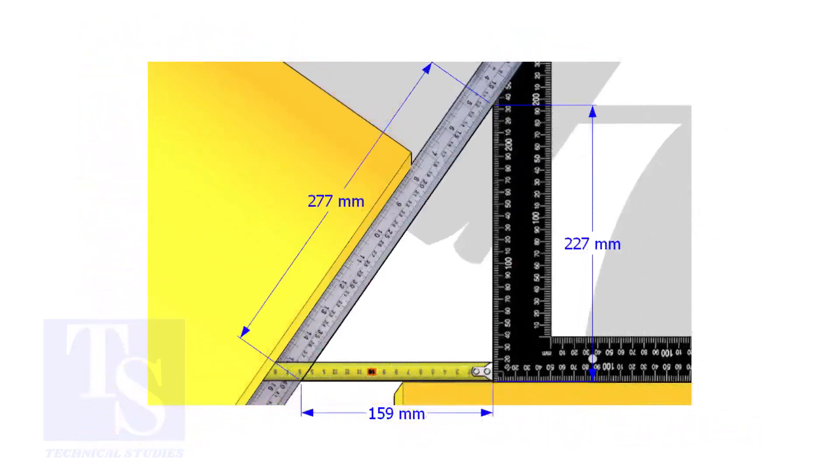Assume that these are the dimensions. Let us calculate the included angle. If you apply the sine rule, the angle will be 159 divided by 277, sine.